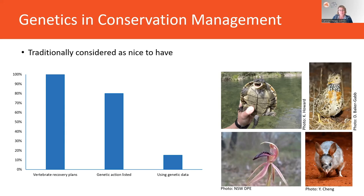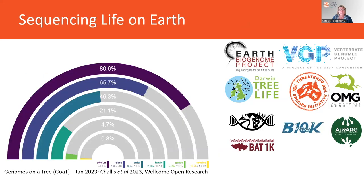One of the key factors has been access to data. There's been a large number of initiatives recently which have started to sequence all eukaryotic life on Earth as a way of combating the declining global biodiversity crisis we find ourselves in. Most of these are under the umbrella project of the Earth Biogenome Project.